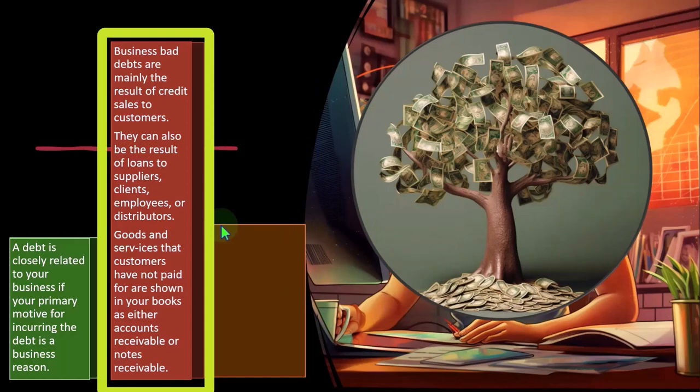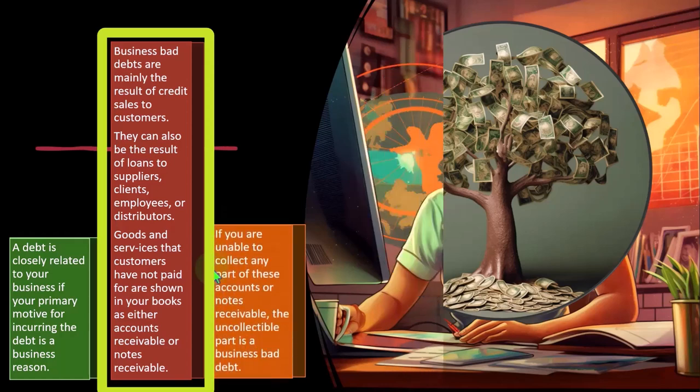If you loan someone money, whoever it may be, then cash is going to go out of the business, you're going to be giving them a loan. And the other side should be going to some kind of loan receivable account, which will be like an asset in a similar situation as accounts receivable.